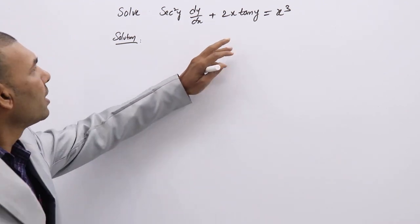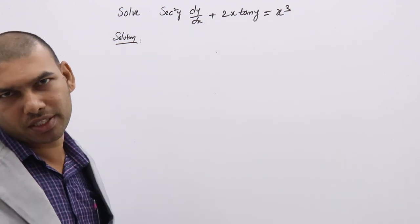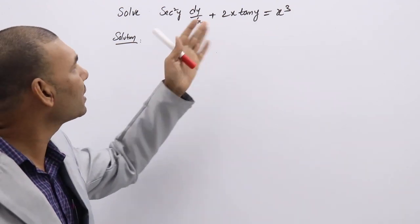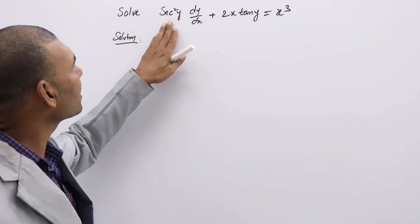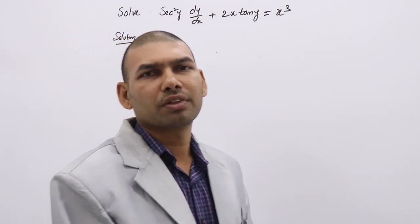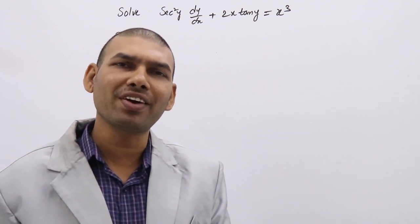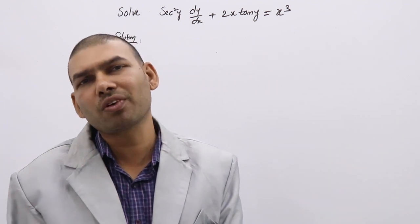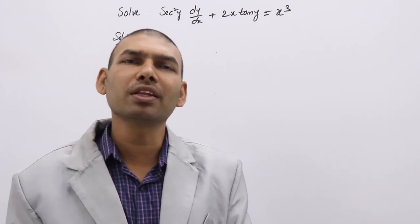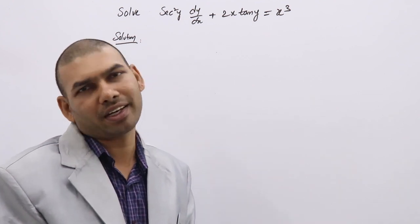If you see here, the differentiation of tan x is sec²x. So if you assume tan y as some other function and differentiate it, sec²y (dy/dx) will become a function of that new variable. If you assume tan y as u, differentiation of tan y gives sec²y (dy/dx) = du/dx. Then the DE will be in the form du/dx + pu = q, which is linear.